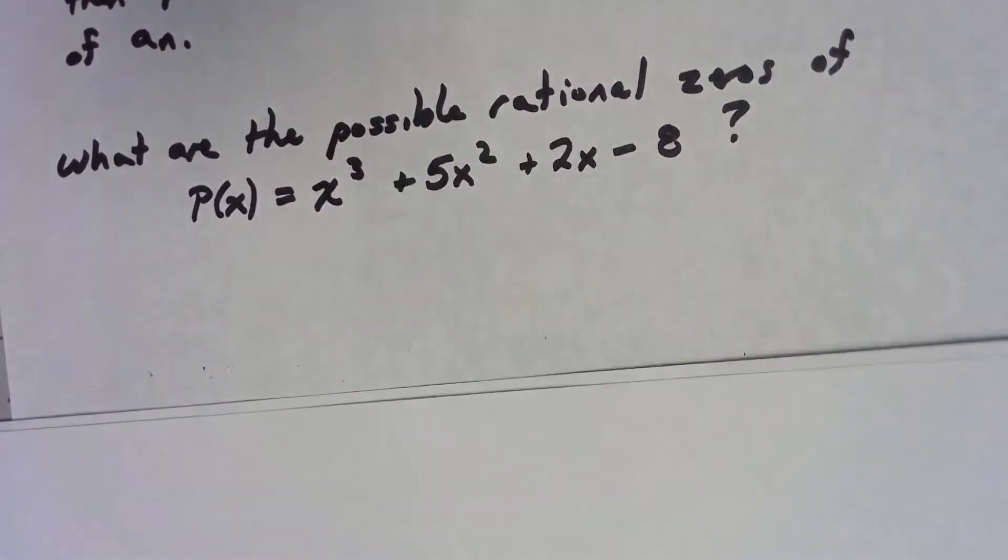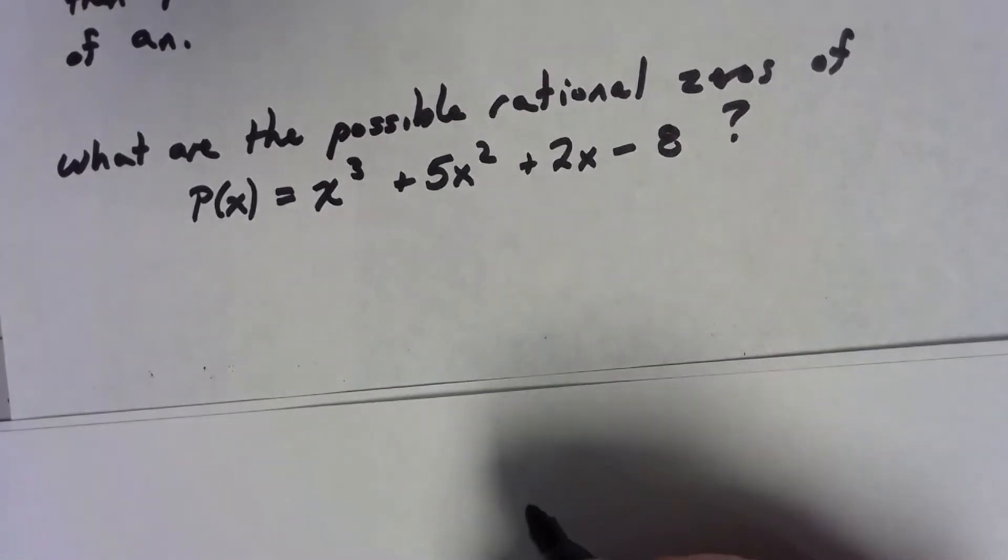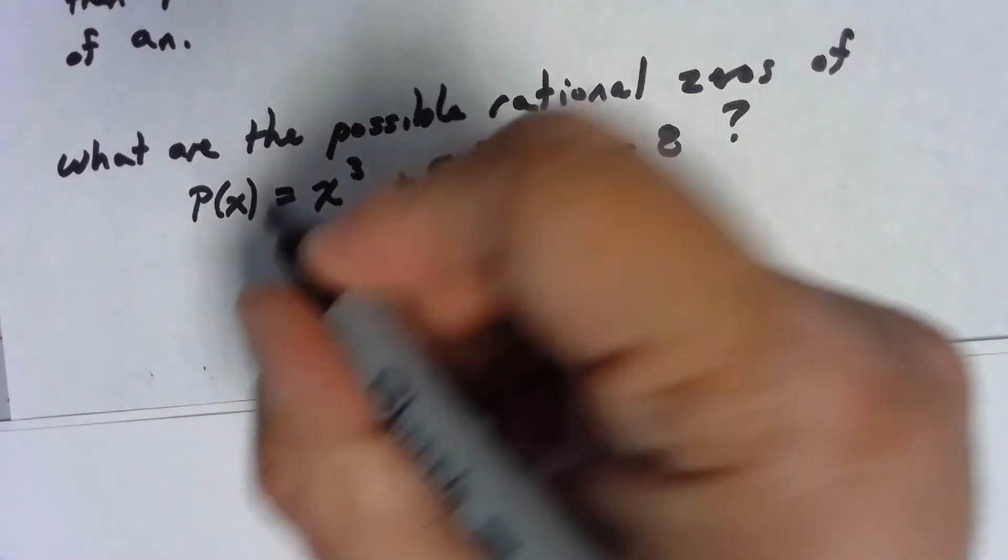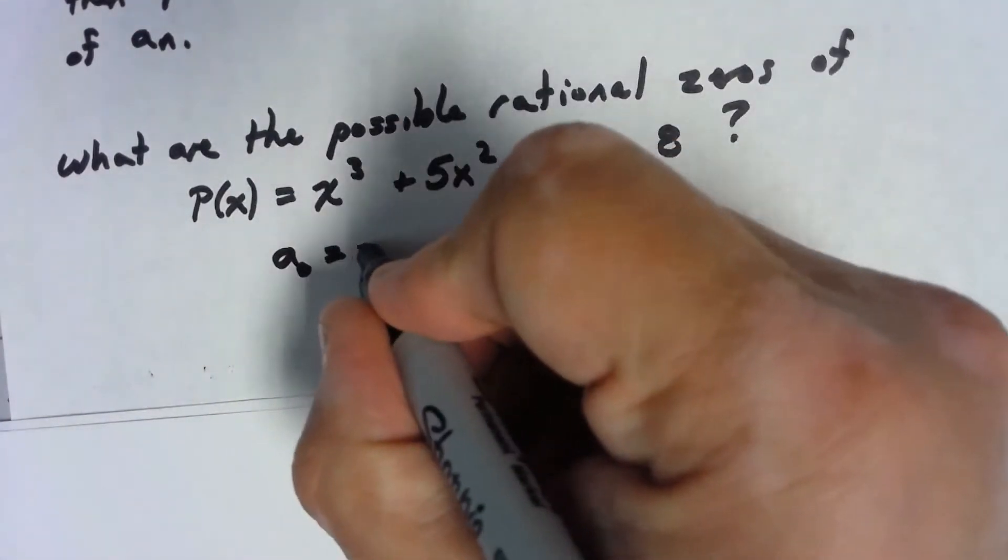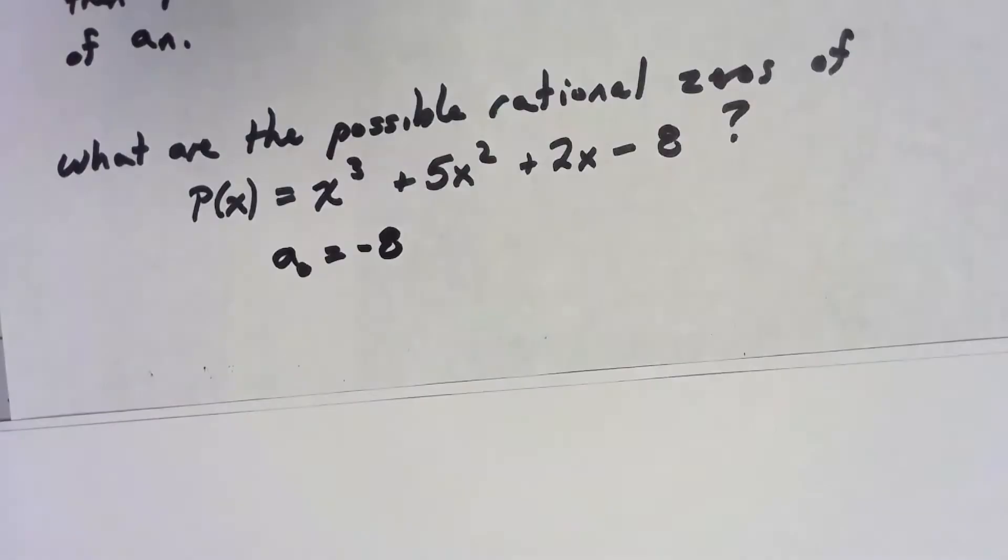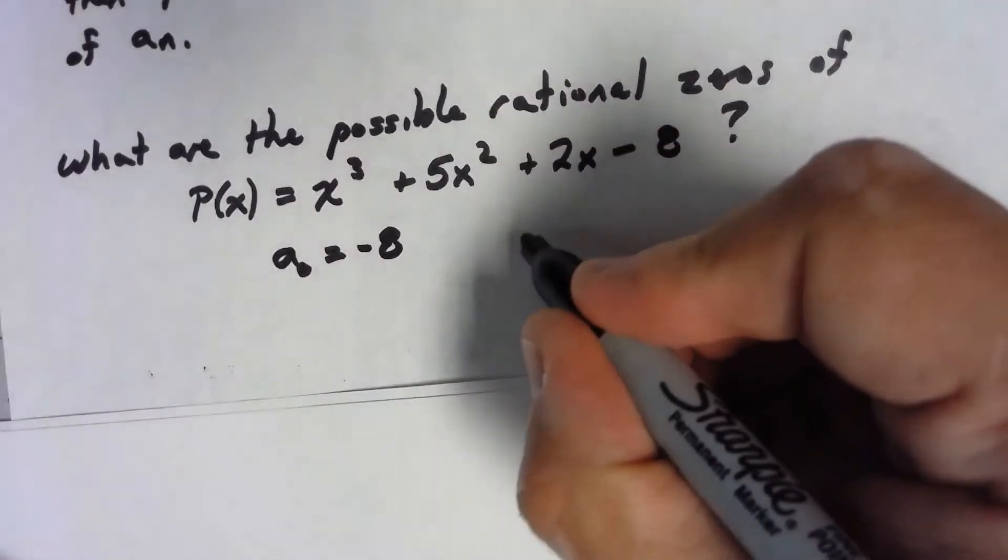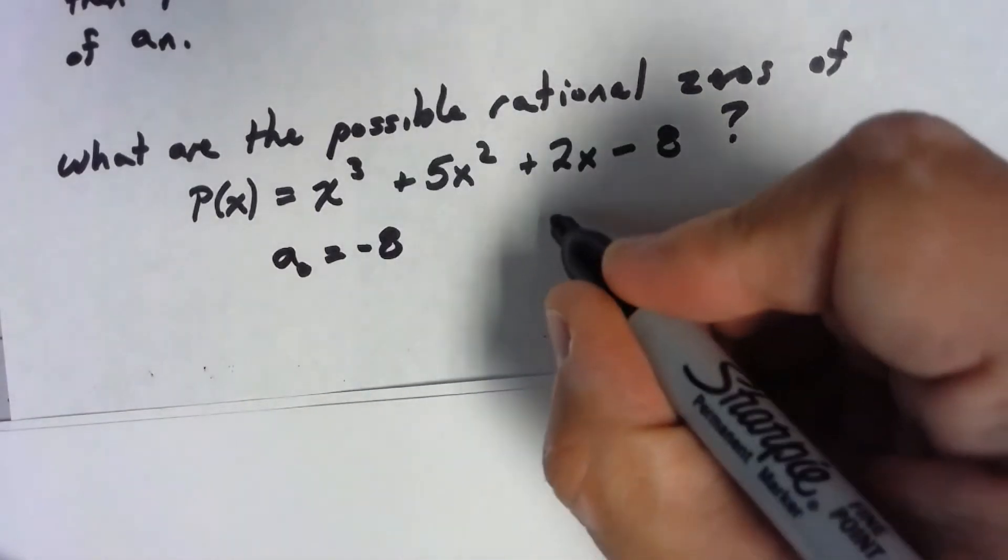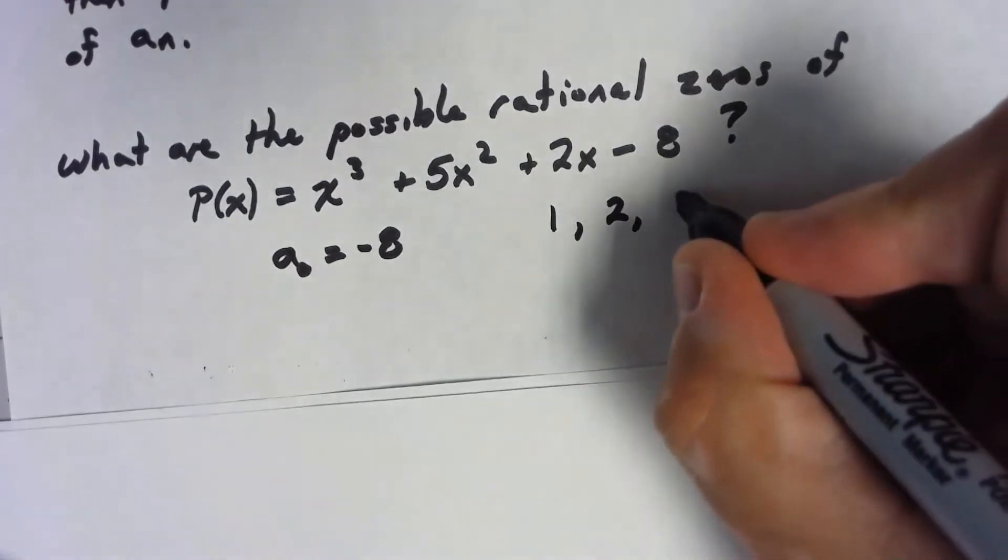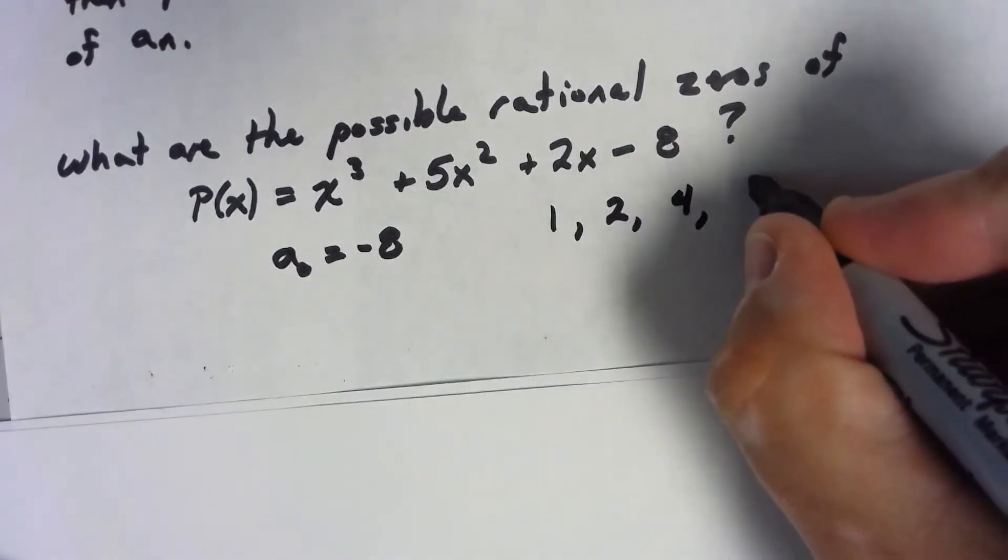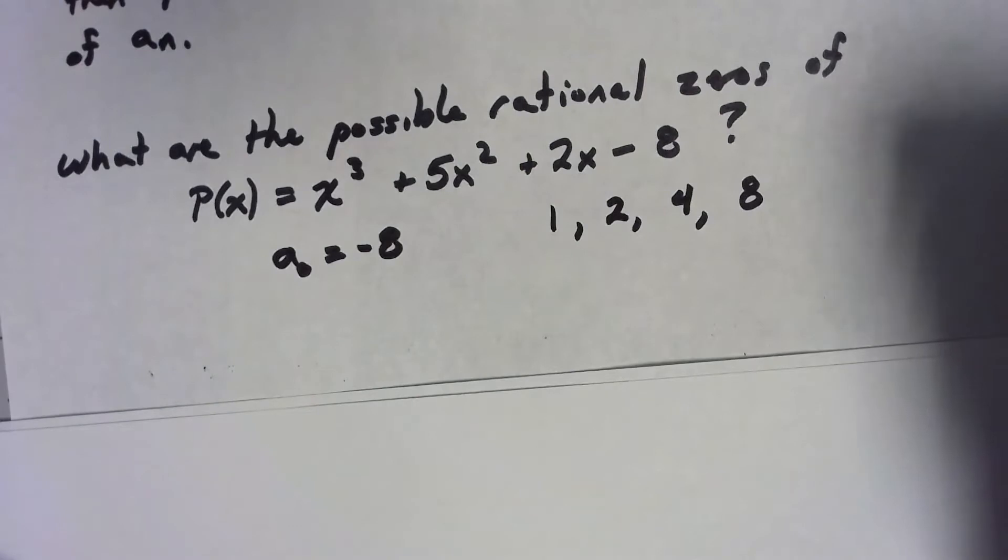So if we take this then what are the possible rational zeros of this polynomial? Well in this case my constant a sub 0 using the terms up there is negative 8. What are the factors of negative 8? Well let's ignore the negative for a second. 1 divides into 8, 2 divides into 8, 4 divides into 8, and 8 divides into 8.